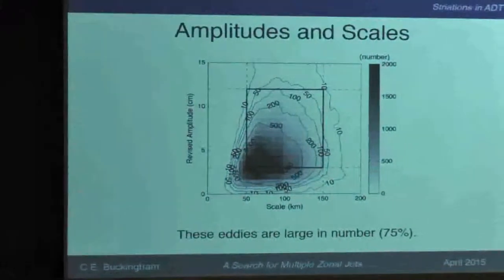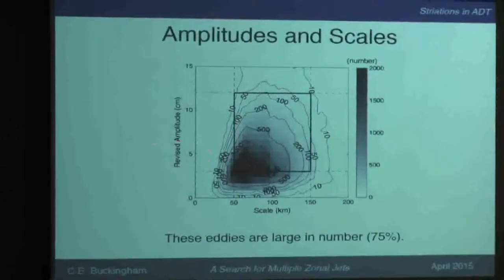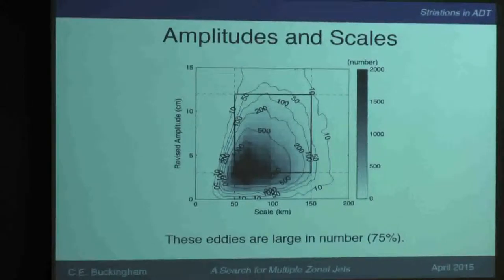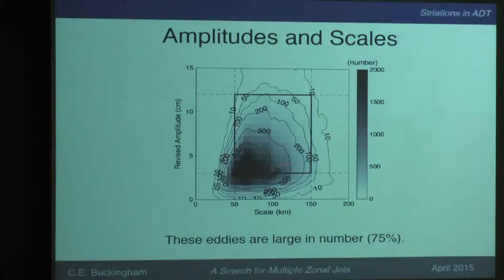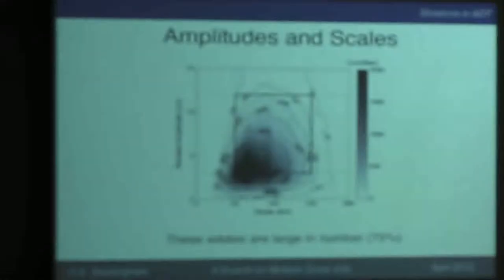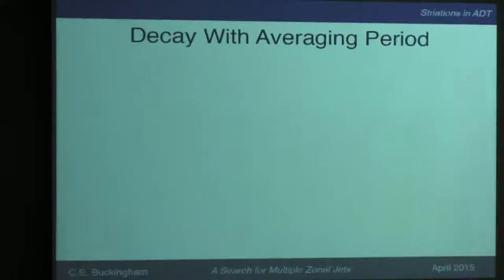This is a two-dimensional histogram of scale versus amplitude. The revised amplitude term accounts for the fact that Dudley-Chelton's amplitudes are biased low, so I've put some effort into making the amplitudes more correct. You find that the number of eddies in that intersection that create the striations is quite large.